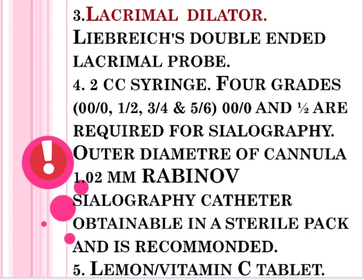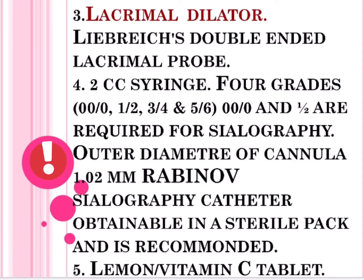Equipment continued: 3) Lacrimal dilator — Labryx double-ended lacrimal probe. 4) Two cc syringe. Catheter sizes for sialography range from grades 000, 0, 1, 2, 3, 4, 5, 000.5 — outer diameter of cannula is 1.02 mm. The sialography catheter is obtainable in a sterile pack and is recommended. 5) Lemon/vitamin C tablet as sialogogue.